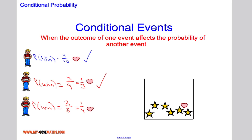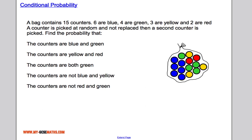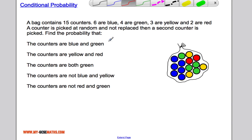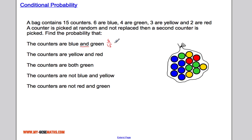Now let's look at a more complex example. We have a bag with 15 counters: six blue, four green, three yellow, and two red. We choose a counter at random without replacing it, then pick a second counter. First, we want the probability of choosing a blue counter and then a green counter. The probability of choosing a blue counter is six out of fifteen, and because it's an 'and' question, we multiply the probabilities.